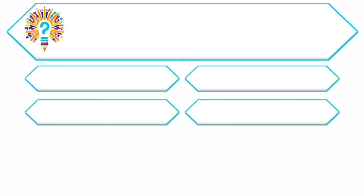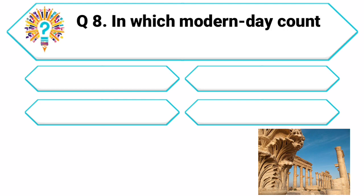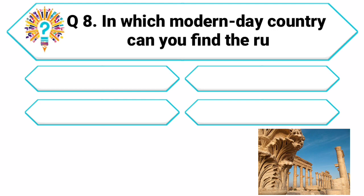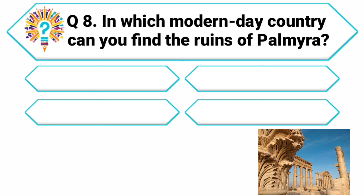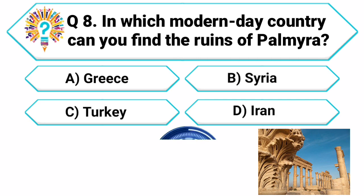Question 8. Our next wonder is the ancient city of Palmyra. In which modern-day country can you find the ruins of Palmyra? Your options are: A. Greece, B. Syria, C. Turkey, D. Iran.